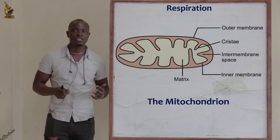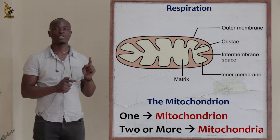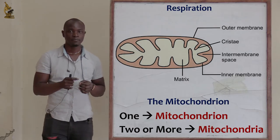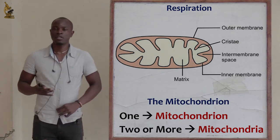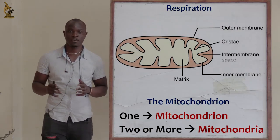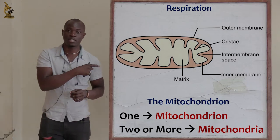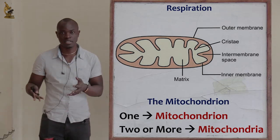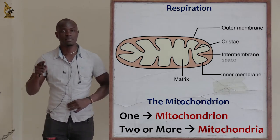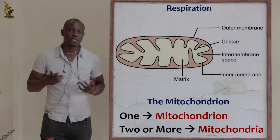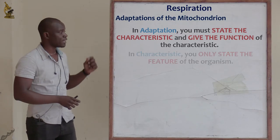The mitochondrion is rod-shaped and is mainly found in the cytoplasm of every cell. In biology, if referring to one, we say mitochondrion — ending with 'on' — but if referring to two or more, we say mitochondria. Take note that plural is a very key factor in biology. A mitochondrion has a smooth outer membrane and a folded inner membrane called the cristae.